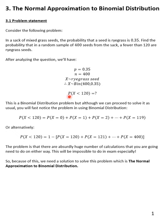We want to solve P(X < 120) as a binomial distribution problem, but you will realize that to find P(X < 120) we would have to do a very large number of calculations — P(X = 0), P(X = 1), P(X = 2), and so on up to P(X = 119). Equally, the other way around would be 1 minus the sum from 120 to 400. This is impossible to do in an exam, so we solve it using normal approximation.